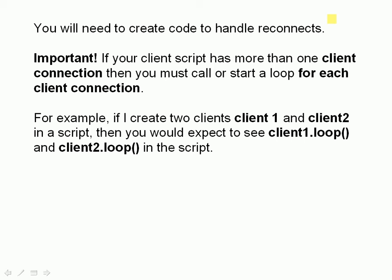It's important to note that if your client script has more than one client connection, then you need to call or start a loop for each client connection. For example, if you create two clients — client1 and client2 in the script — then you would expect to see client1.loop and client2.loop in the script, or client1.loop_start and client2.loop_start somewhere in the script.